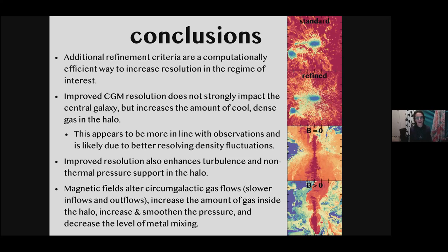To conclude: there are many ways to add additional resolution to the regime you're interested in, and it's a computationally efficient way to do so. It doesn't seem to significantly impact the central galaxy, but it does greatly increase the amount of cool gas in the halo — probably driven by density fluctuations — and makes it easier to match observations. Improved resolution also enhances turbulence and non-thermal pressure support. Magnetic fields enhance pressure, alter circumgalactic flows by slowing inflows and outflows, smooth the pressure, temperature, and density, and decrease the level of metal mixing.